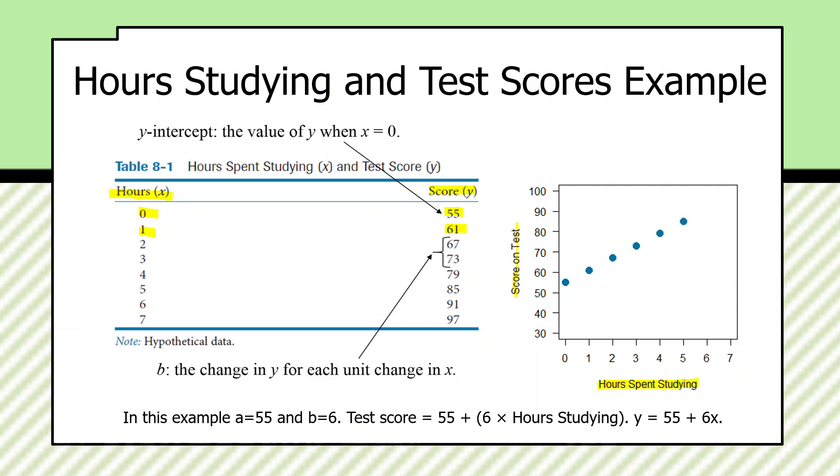The value of each additional hour spent studying is exactly six points. The value of y, the score on the exam for zero hours spent studying, that is when x is zero, is 55, as we can see here.